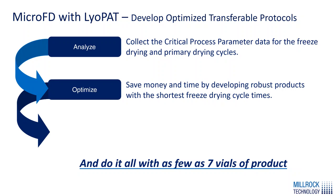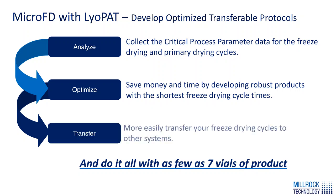Once you've done that, you can go into optimizing the cycle. We give you the tools necessary to change your freezing cycles and your primary drying cycles to develop the shortest freeze-drying time and to develop the critical process parameters associated with those that you can use for transfer. Once you've developed all these critical process parameters and optimized your cycle, you can then transfer the cycle to larger systems. You can do all this with anywhere from 3 to 37 vials.